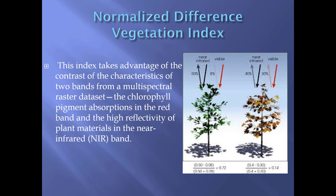The reason this works is that chlorophyll pigments absorb in the red band and also have high reflectivity in the near infrared band. This image shows the behavior of a typical healthy tree, where there is a lot of absorption of the red band with only 8% reflectance and a 50% reflectance of near infrared.